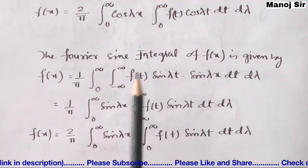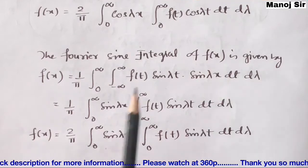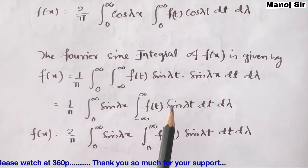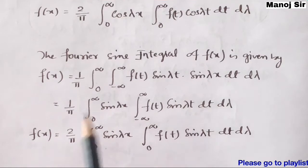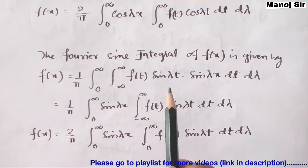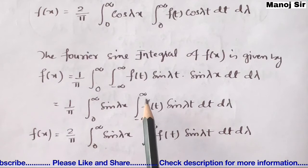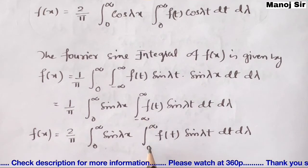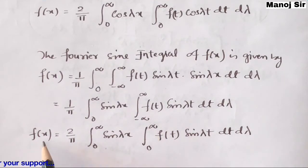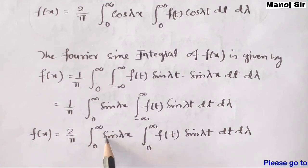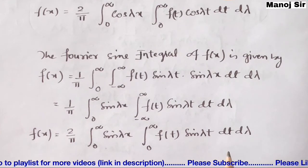We apply the Fourier Sine Integral when f(x) is an odd function, or when the problem directly asks for the Fourier Sine Integral. Since the function is odd, we replace the limit from −∞ to +∞ with 2 times the integral from 0 to ∞, giving the simplified formula: f(x) = (2/π) ∫₀^∞ sin(λx) [∫₀^∞ f(t) sin(λt) dt] dλ.